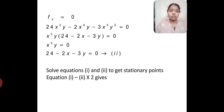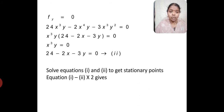Now taking the other condition, fy equal to 0: 24x³y minus 2x⁴y minus 3x³y² equal to 0. Here x³y is common, so after factoring we get x³y(24 minus 2x minus 3y) equal to 0. This gives x³y equal to 0 and 24 minus 2x minus 3y equal to 0. This is sub-equation 2.